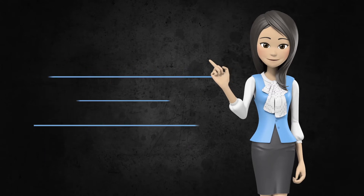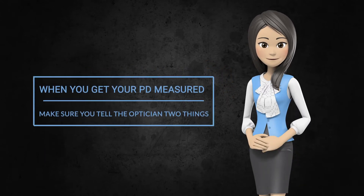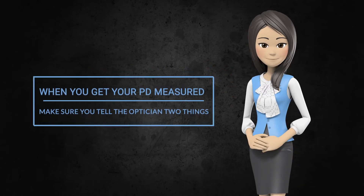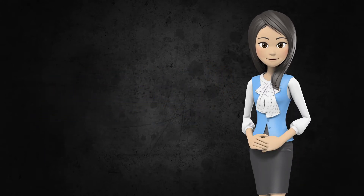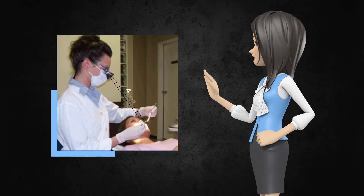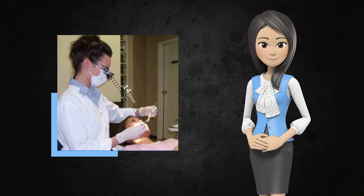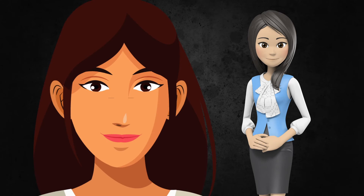When you get your PD measured, make sure you tell the optician two things. First, you want the PD measured for your optimal working distance — 14 inches for example. And second, you want the PD measured for each eye separately.